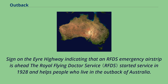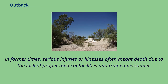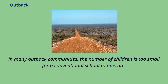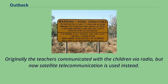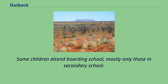The Royal Flying Doctor Service started service in 1928 and helps people who live in the outback of Australia. In former times, serious injuries or illnesses often meant death due to the lack of proper medical facilities and trained personnel. In many outback communities, the number of children is too small for a conventional school to operate. Children are educated at home by the School of the Air — originally teachers communicated with the children via radio, but now satellite telecommunication is used instead. Some children attend boarding school, mostly only those in secondary school.